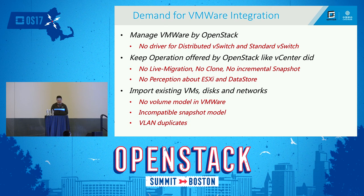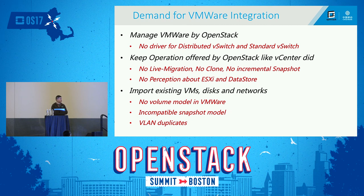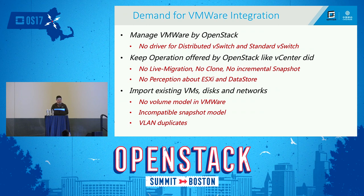Let's turn to VMware integration. Our customers proposed three major demands: manage VMs with OpenStack, keep operations offered by OpenStack similar to what vCenter provides, and import existing virtual machines, disks, and networks. However, there are problems. The community has no neutral driver for DVS and standard vSwitch. OpenStack has no live migration for VMware, no clone, and no incremental snapshot. Also, OpenStack can only see the cluster in VMware — it cannot see individual ESXi hosts or datastores.